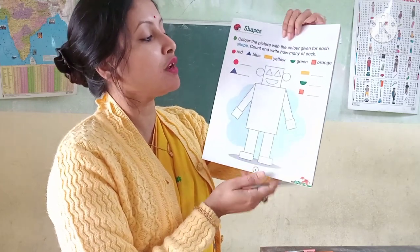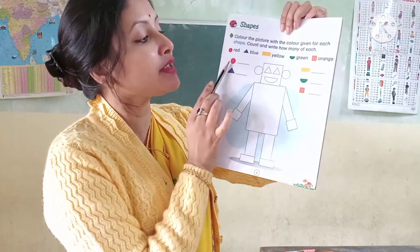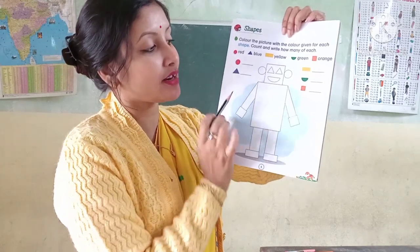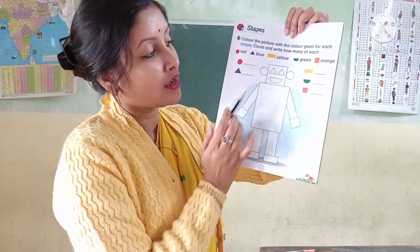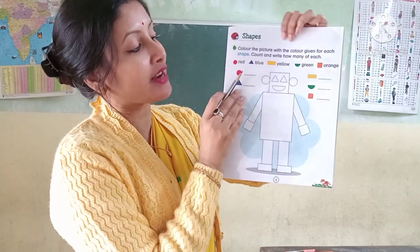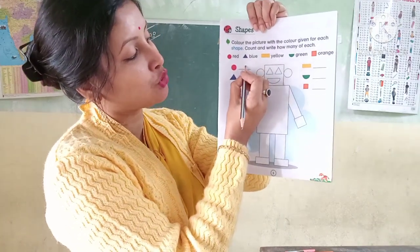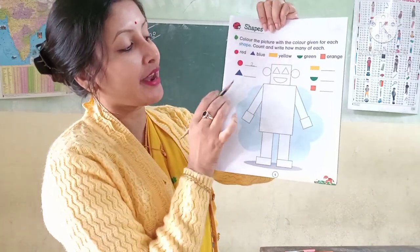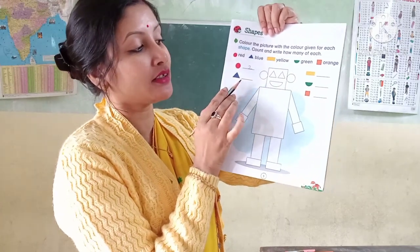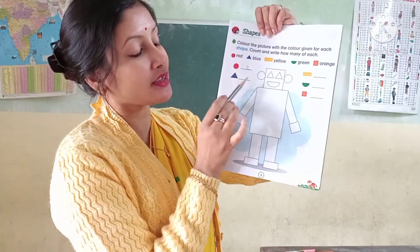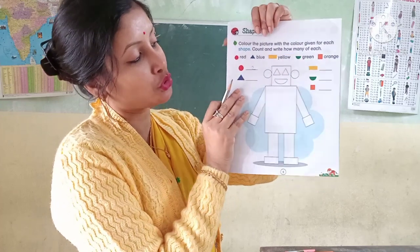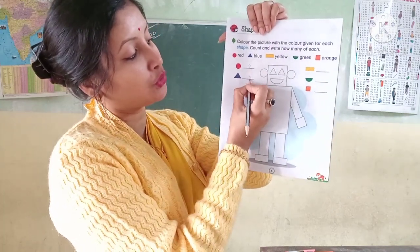First of all, you have to find out how many circles are there. One, two — only two circles. So write in this box, two. And next one is triangle — find out how many triangles are there. One, two — triangles are also two. So write here, two.